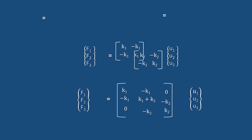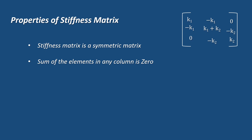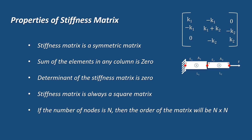Let's look at some properties of the stiffness matrix. The stiffness matrix is a symmetric matrix, as the upper and lower triangular elements are the same. The sum of elements in any column is zero — for example, in the first column, K1 plus (minus K1) equals zero. The determinant of the matrix is always zero. The stiffness matrix is always a square matrix, and its order equals the number of nodes in the member. In the previous example, a 3-noded member gives a 3 by 3 stiffness matrix.